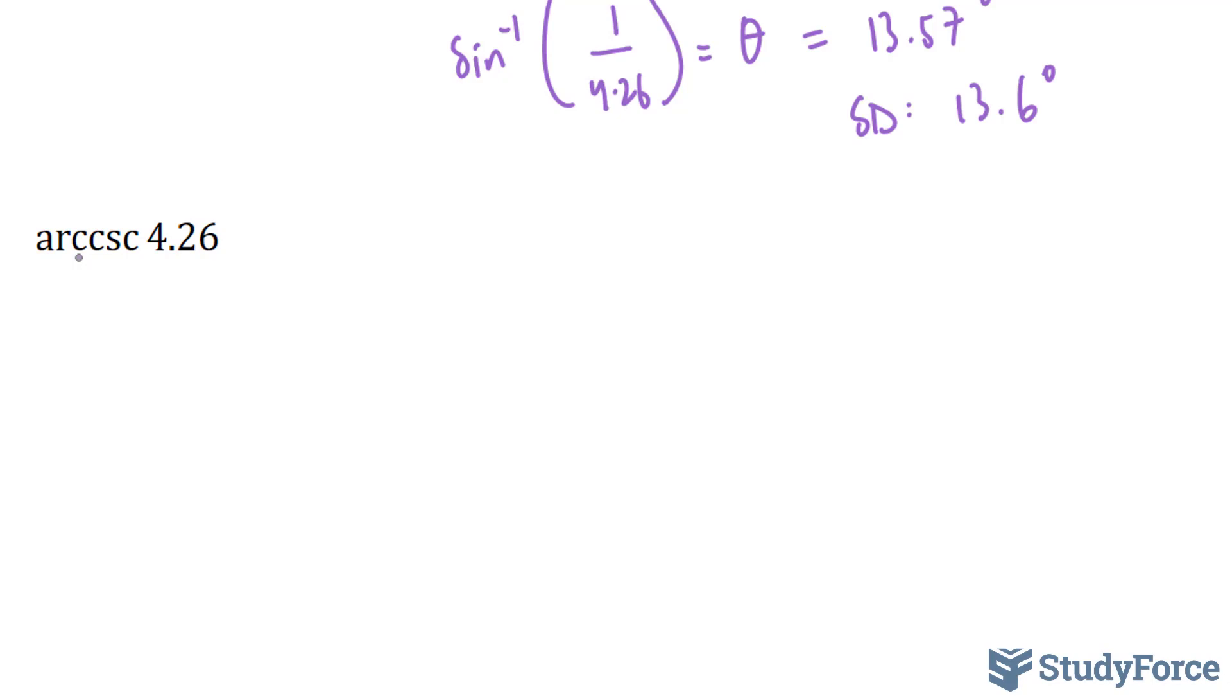First of all, arc cosecant. Arc is another word for saying inverse. So what this actually is saying is cosecant inverse 4.26. So technically, this number right here, that's the ratio. That's not an angle.